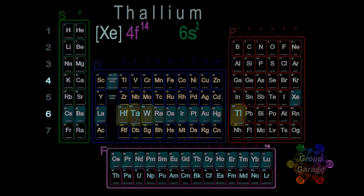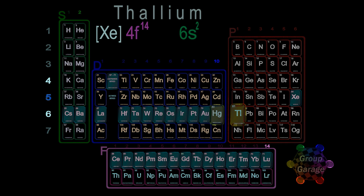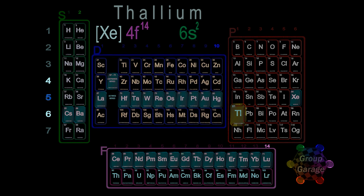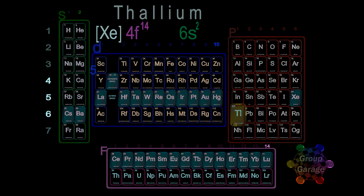Continuing in the d-block, we see all 10 elements. The d-block is filling one period above where it's shown in the table, so we write the period number 5, followed by the 10 electrons in the d-block, d10.